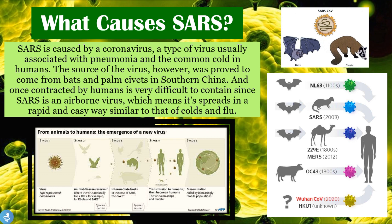Since SARS is an airborne virus, it spreads in a very rapid and easy way, similar to that of colds and flus. When we did further investigation of the 2002 outbreak in southern China, we found that the source of the SARS coronavirus was actually from bats in China, which is where the virus actually lives and thrives normally.